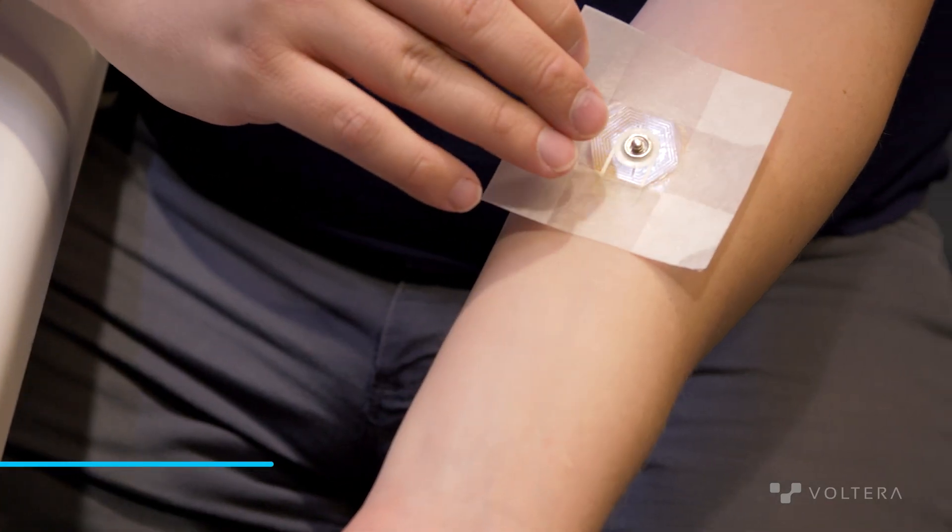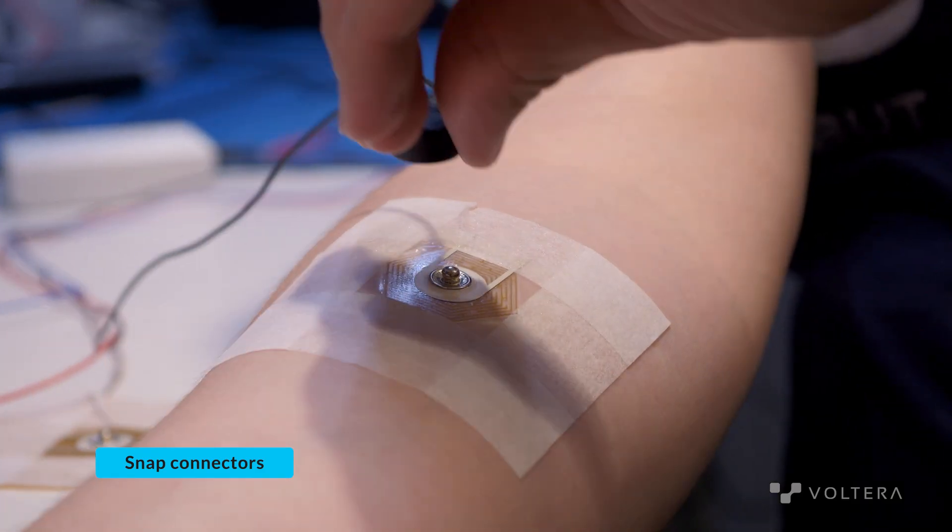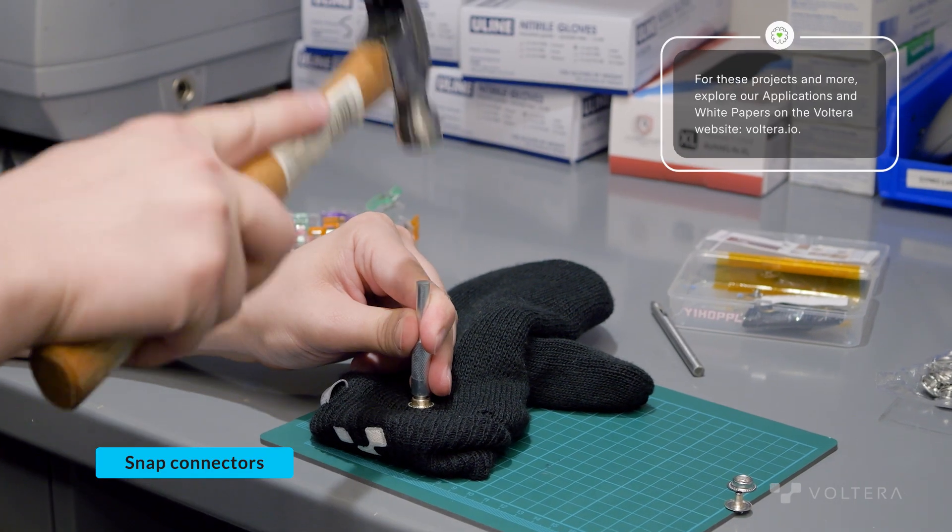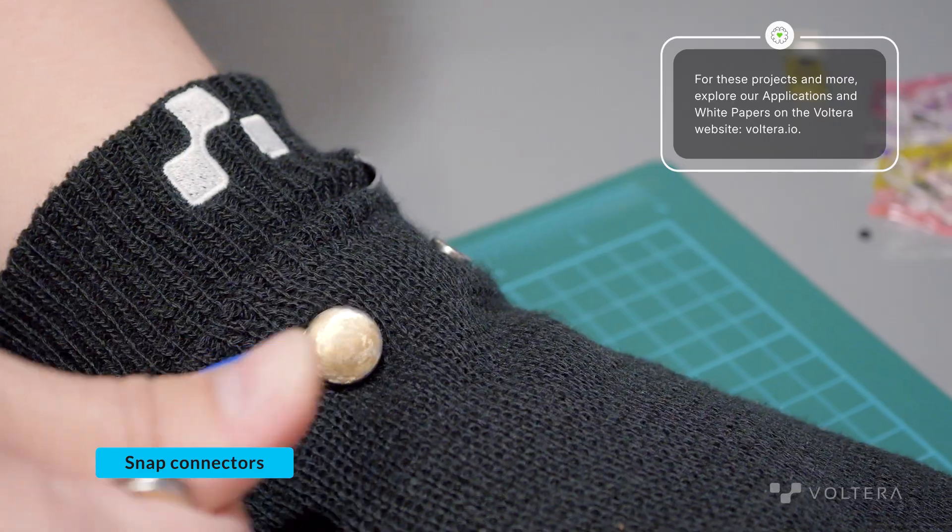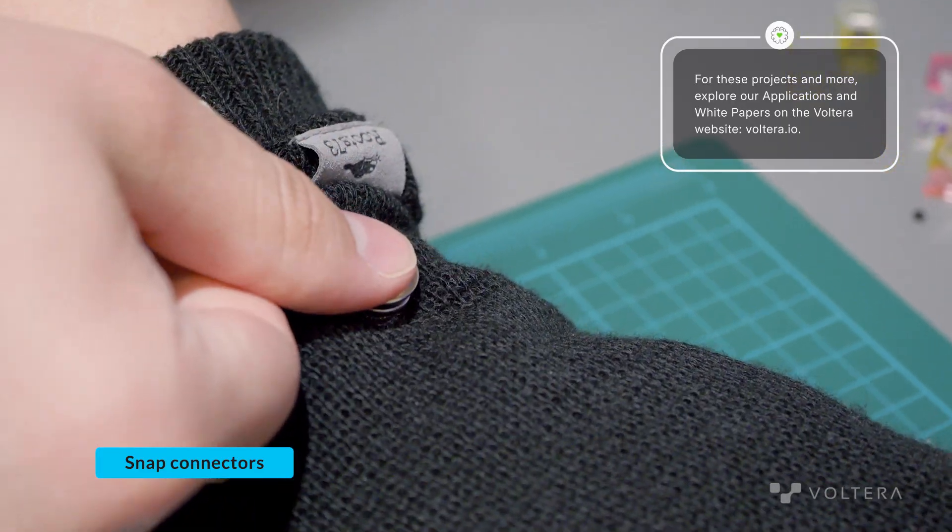Our next connection will be done using snap connectors. For this we have ECG electrodes printed on TPU and a heated mitten printed directly out of cotton fabric. If you're interested in seeing these full projects start to finish, check out the videos we have on each of them.